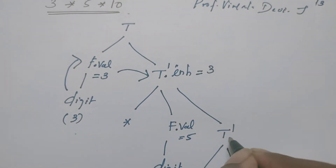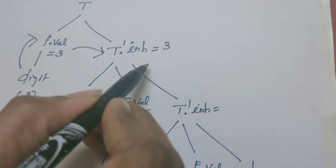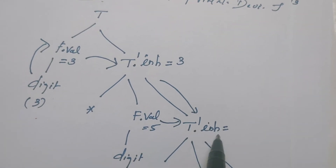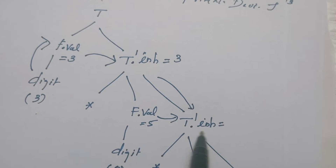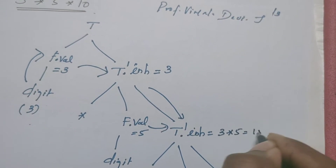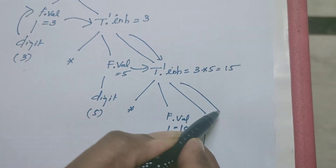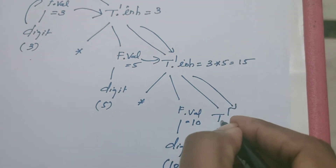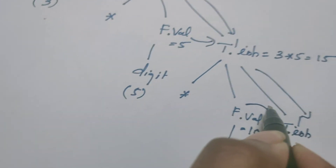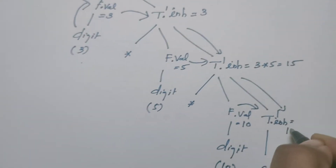At this node, the attribute value is calculated from the parent node as well as from its sibling. So T'.inherited at this junction is nothing but 3 into 5, which is equal to 15. Again further, the value flows down to its child node. This T' is calculating its attribute value from the root node as well as from the sibling, which is nothing but 15 into 10, which is equal to 150.